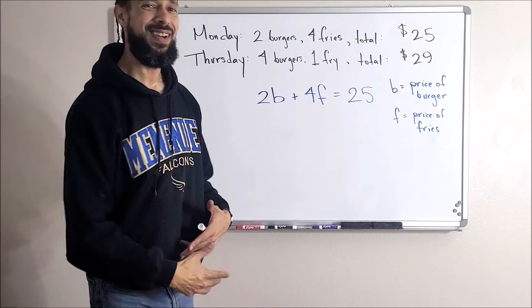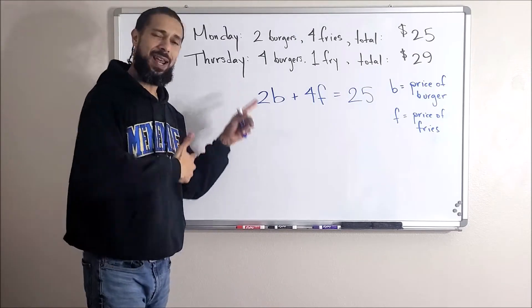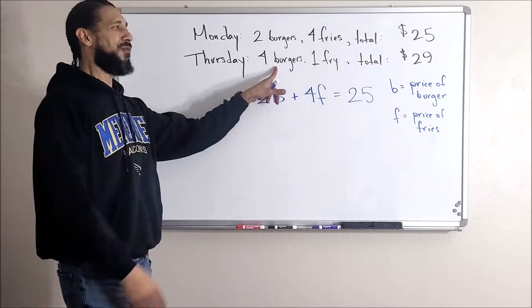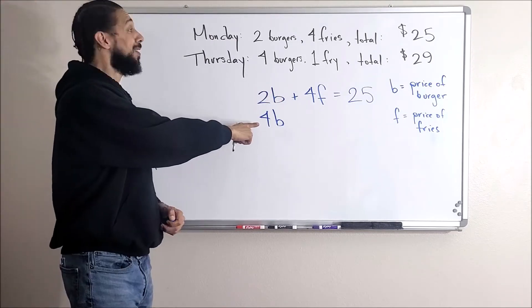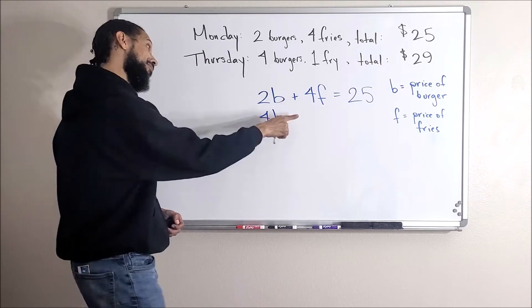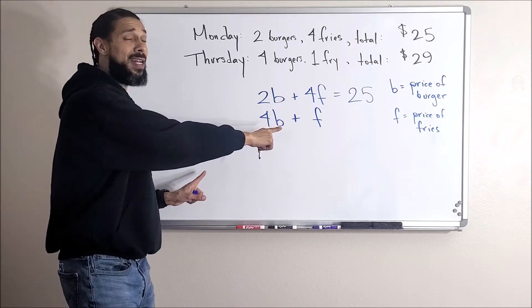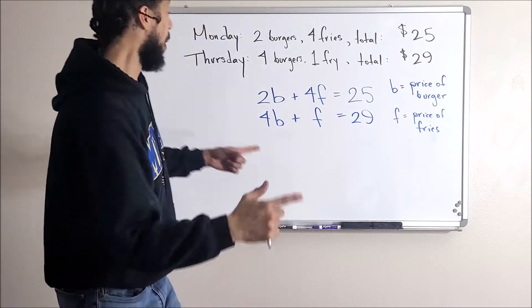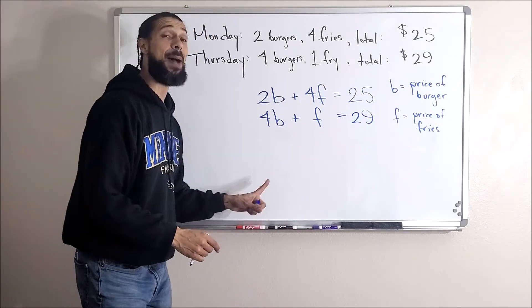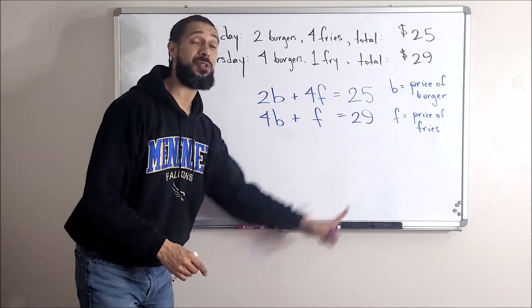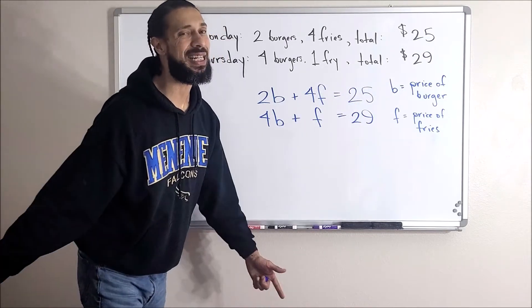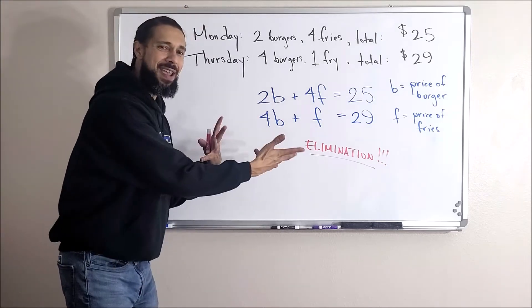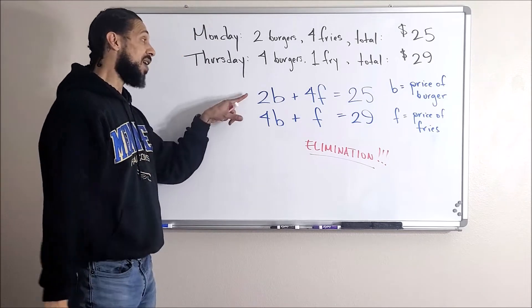Now for the second situation, I just come up with a second equation. Four burgers plus one fry added up to $29, exactly right. Notice how these equations are set up exactly the same: b's on top of b's, f's on top of f's, numbers on top of numbers. I'm already thinking elimination. If I do a little sign change and maybe multiply by a number, I bet if I multiply this top equation times negative two, it would result in this.